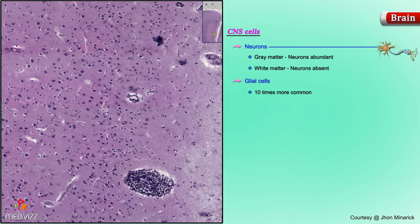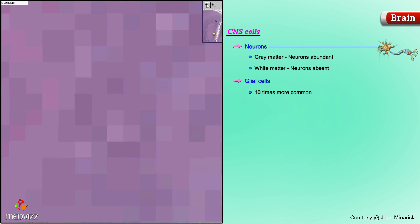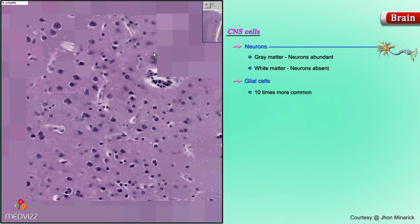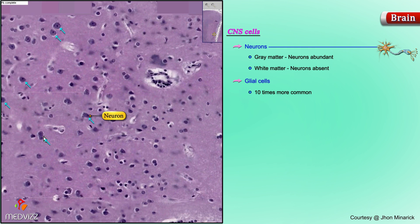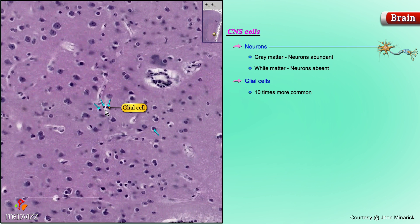I'm going to show you this on higher power now as well. Here's a neuron, here's a neuron — notice that these neurons are about 10 times bigger than all of these tiny cells, which are glial cells. There's a glial cell, there's a glial cell, there's a glial cell. Even though in this field it looks like they're about as common, in reality glial cells are about 10 times more common.